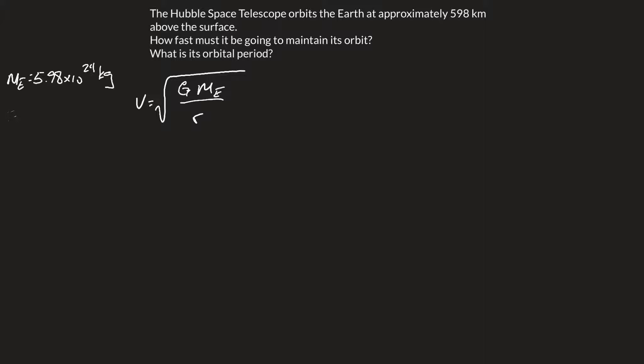So the total radius we're dealing with here is going to be 6.38 times 10 to the 6 meters, plus 5.98 times 10 to the 5 meters. That gives us a total r value of 6.978 times 10 to the 6 meters. That's what we're going to use in our equation.